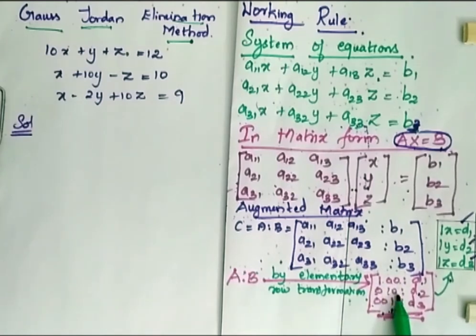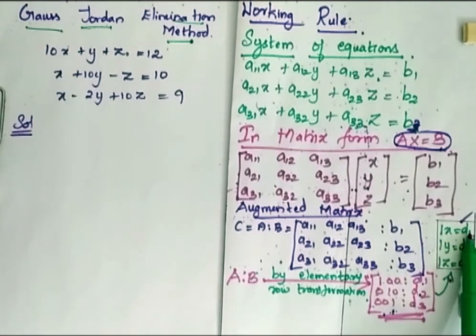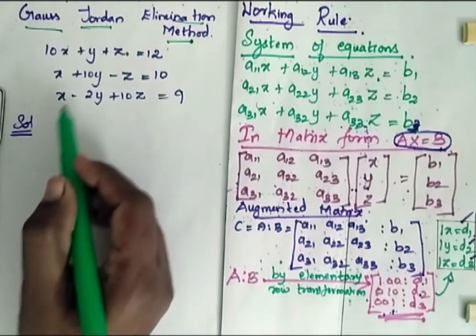So form a matrix like this. From this matrix reduce it to the form such that it has 1, 0, 0, 0, 1, 0, 0, 0, 1. So that we have 1X is equal to D1, 1Y is equal to D2 and 1Z is equal to D3. That is by elementary row transformation the matrix has to be reduced to this format.